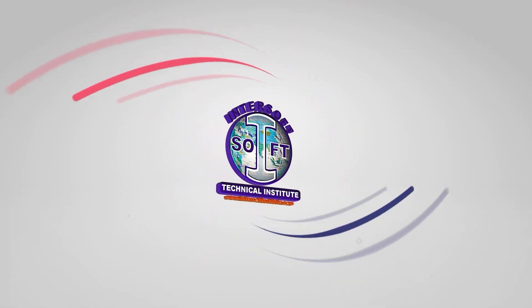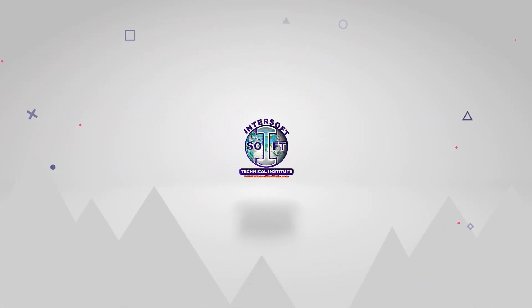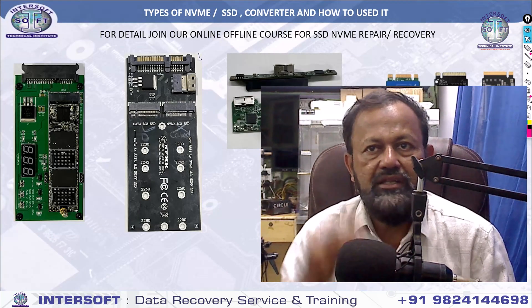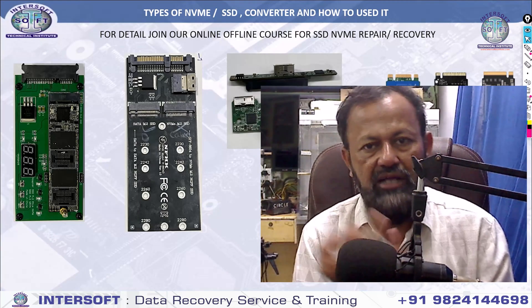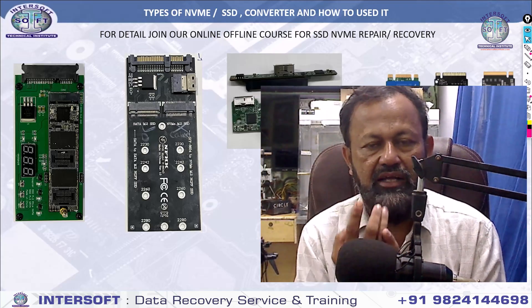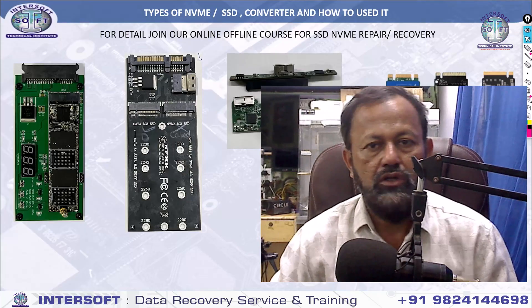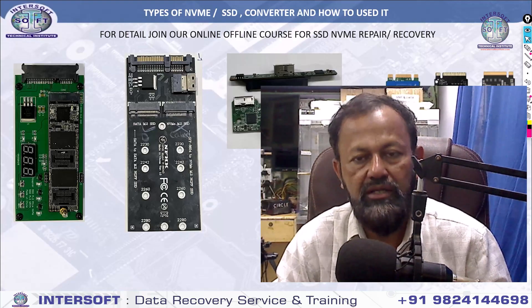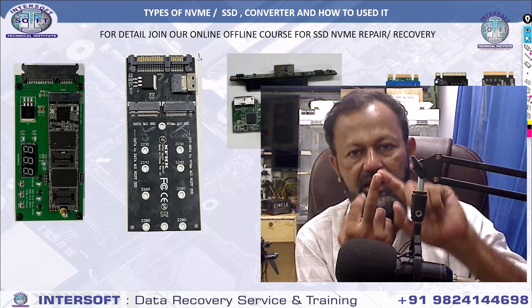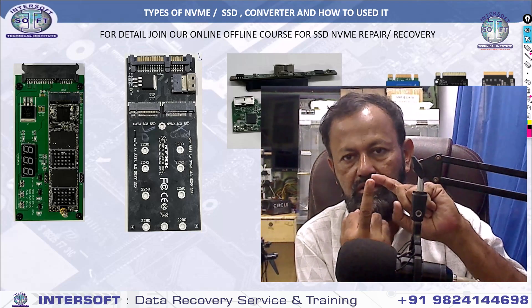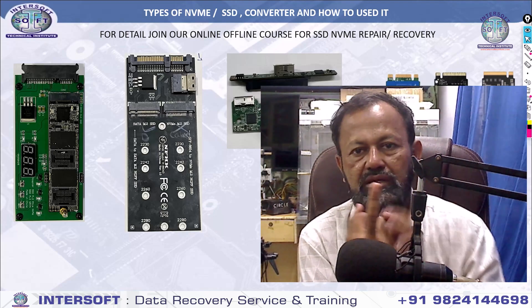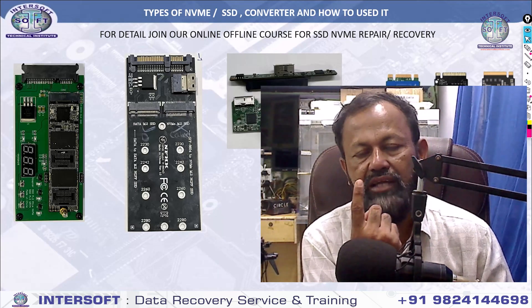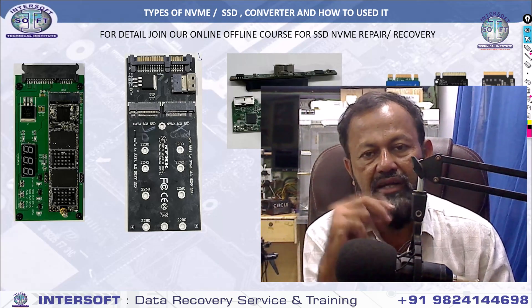Welcome friends. Today we will show you about the types of NVMe SSD. There are normally three types: NVMe SATA, M.2 NVMe SATA M.2, or NVMe M.2. Many users purchase this device and tell us that it is not working. There are two types of technology: one is SATA, which works as a SATA hard disk or SATA SSD, and another is NVMe M.2 that requires special connections.